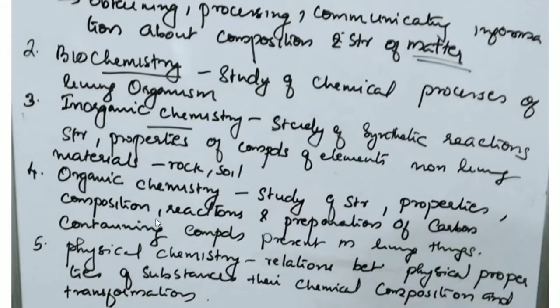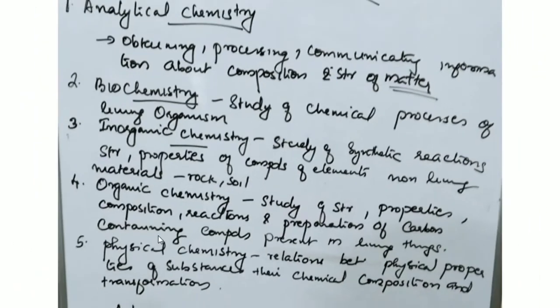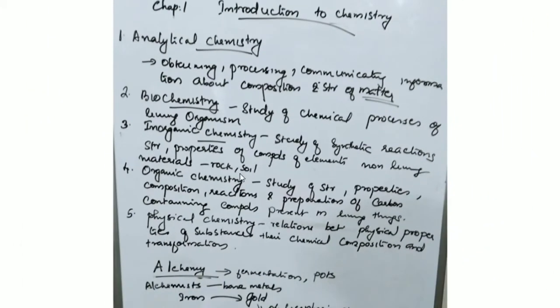Physical chemistry deals with the relation between physical and chemical properties of substances — not only chemical properties, but all physical properties such as odor, shape, and color come under physical chemistry.